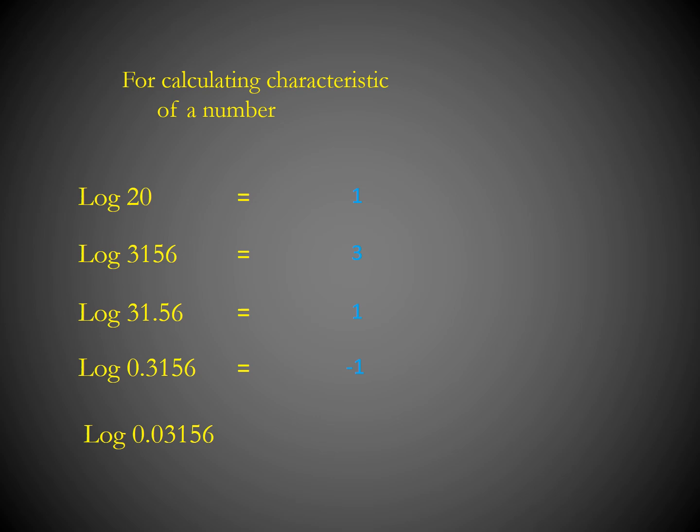For log 0.03156: there are no digits before the decimal except 0, so we count zeros after the decimal point. There is 1 zero after the decimal. We add 1 to get 1 + 1 = 2, and write it as minus 2. So the characteristic is −2.